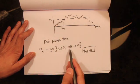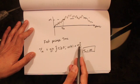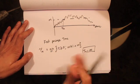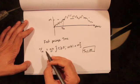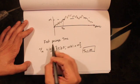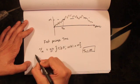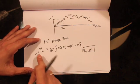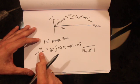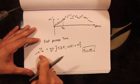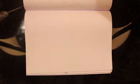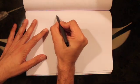Otherwise, first passage time is the earliest time when the Brownian motion achieves that level M, given by the minimum of time such that the Brownian motion equals that level. Now what we want to do is figure out the distribution of first passage time using the reflection principle.